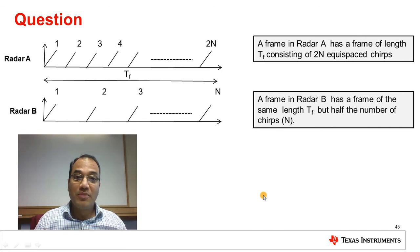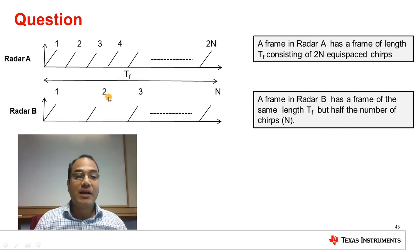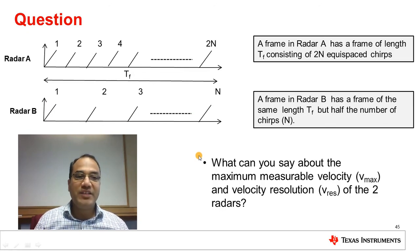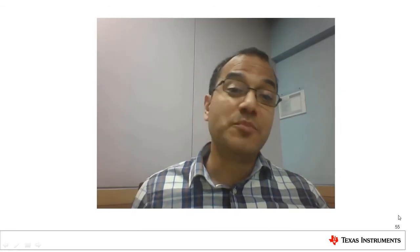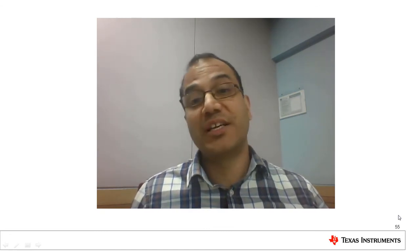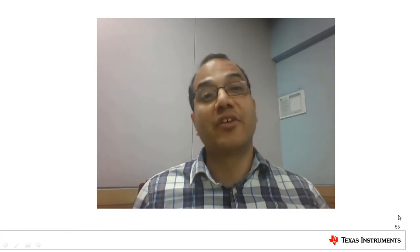Time for a question. These two frames have the same frame length Tf, but the frame for radar A has twice the number of chirps compared to radar B. What can you say about the maximum measurable velocity and the velocity resolution of these two frames? This brings us to the end of the third module. In the next module, we are going to use all that we've learned about range and velocity estimation to design a transmit signal meeting specified requirements.